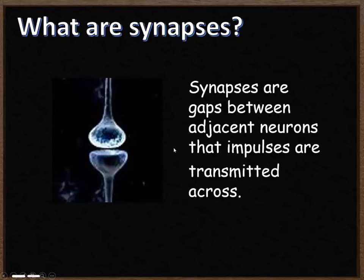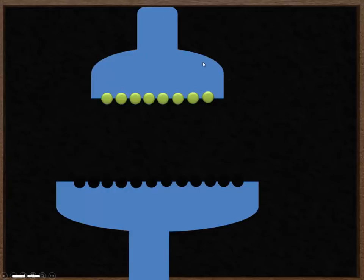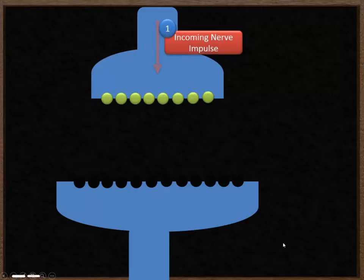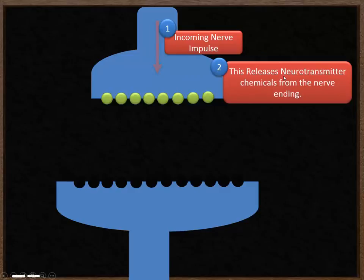Here's a synapse. The electrical impulse is going to come in from the top. This is the gap called the synapse, then the electrical impulse needs to leave along the second neuron. The first step is having an incoming nerve impulse, which causes neurotransmitter chemicals to be released from the nerve ending. Neuro, like neuron — transmitter means it's going to transmit across the gap.